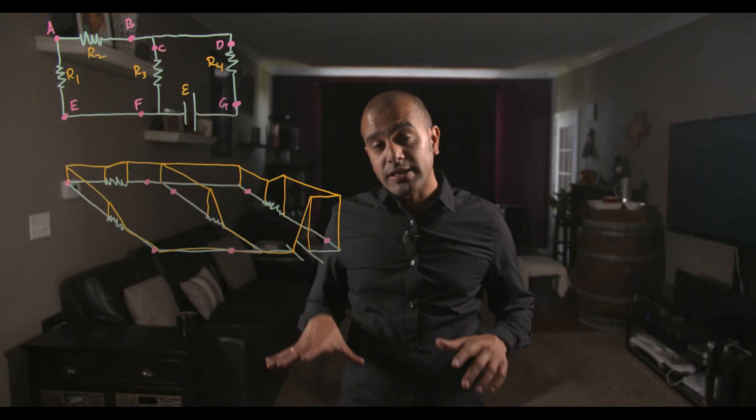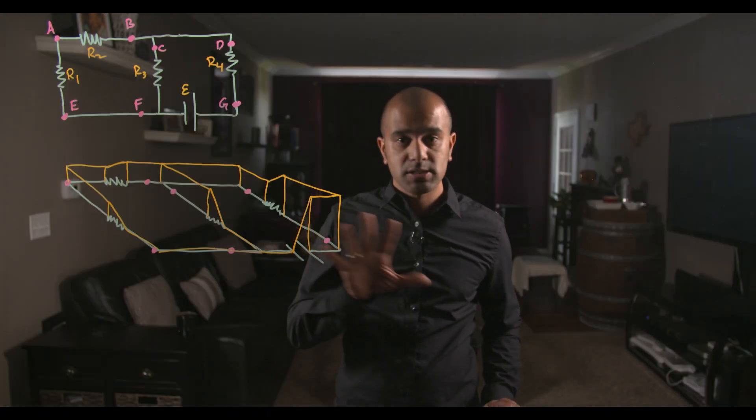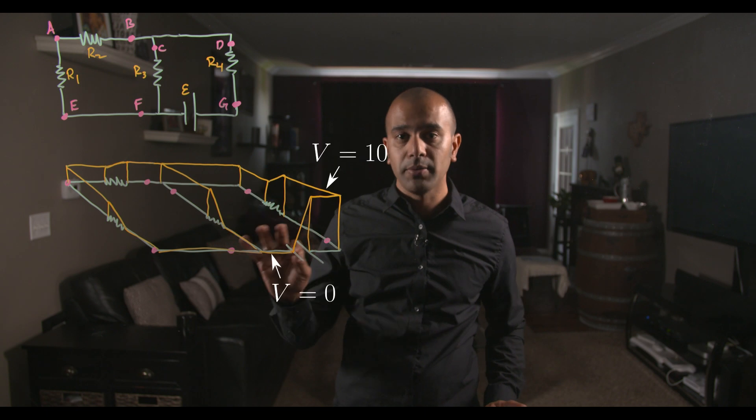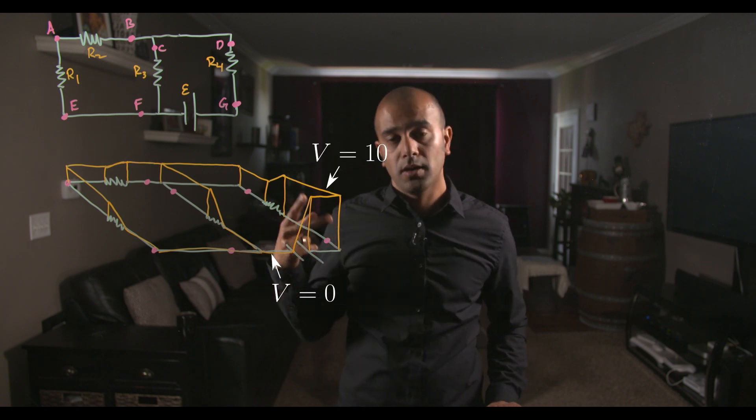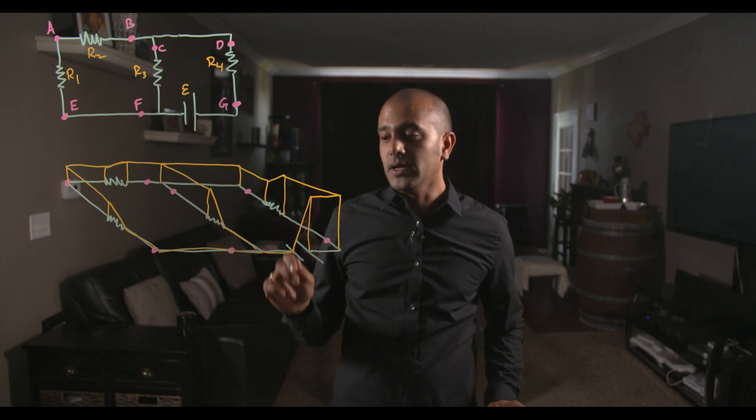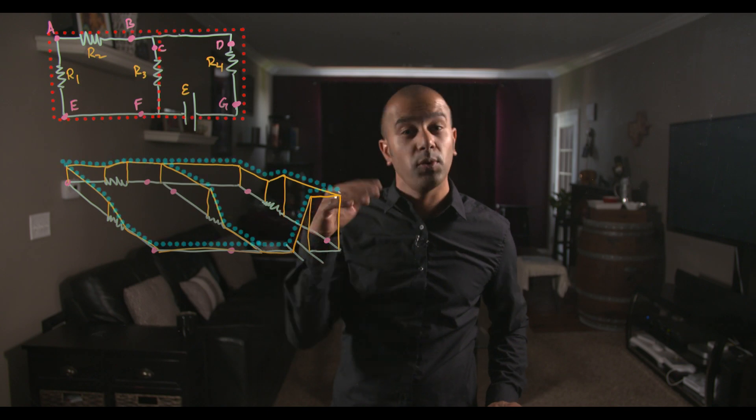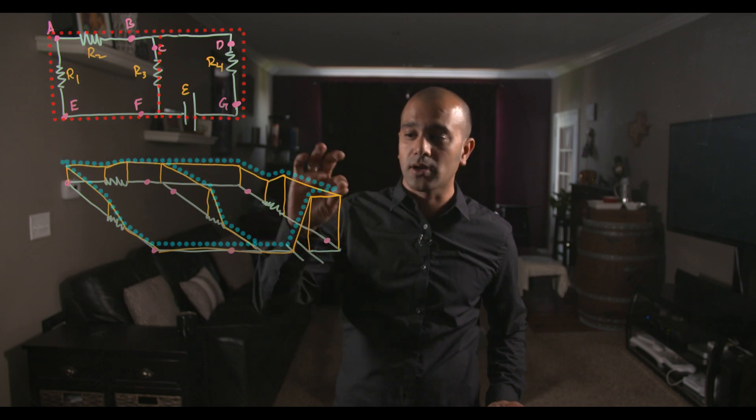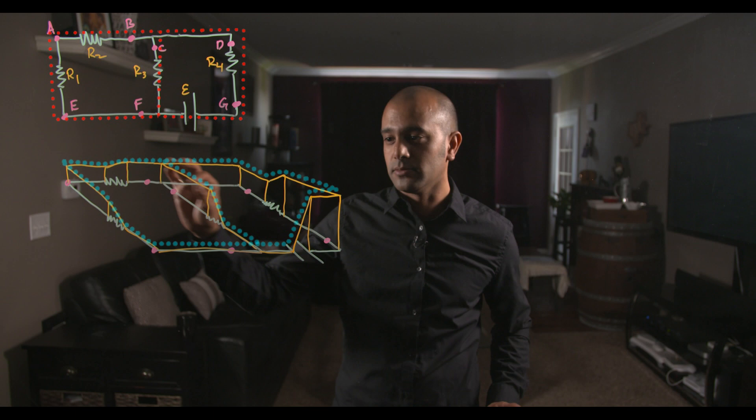Now what this diagram makes clear is that first of all, the voltage is not something that flows or moves. It's a property of the circuit diagram at each point. And then the second thing it makes clear is that you can determine which way the current is flowing by just imagining the current as a ball rolling down these ramps.